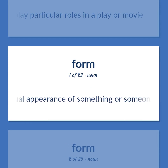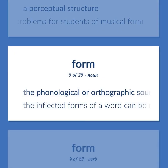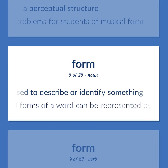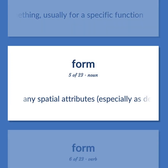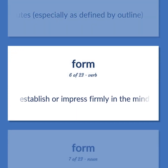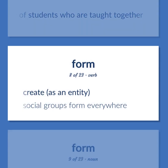Form: The visual appearance of something or someone. A perceptual structure — the composition presents problems for students of musical form. The phonological or orthographic sound or appearance of a word that can be used to describe or identify something. The inflected forms of a word can be represented by a stem in a list of inflections to be attached. Make something, usually for a specific function. Any spatial attributes, especially as defined by outline. Establish or impress firmly in the mind. A body of students who are taught together. Create, as an entity — social groups form everywhere.